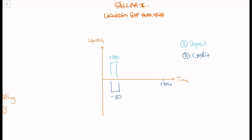In one year, the bank will get 55 euros back from the company. And let's say that from the depositor, we expect that within six months he will withdraw 10 euros from his account. Looking at this simple time profile: at the beginning of the year the bank has 50 in cash, then there's a deduction of 10, and at the end of the year the bank gets 55 back — going up from 40 plus 55 to 95. This is the liquidity cash profile.